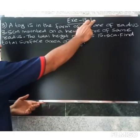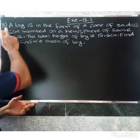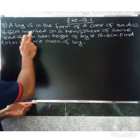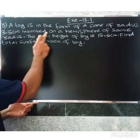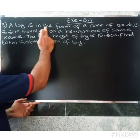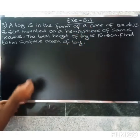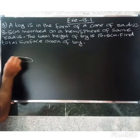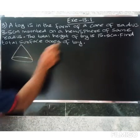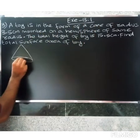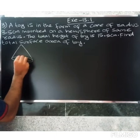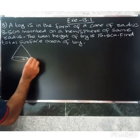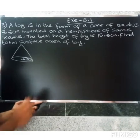Welcome friends. This is Exercise 13.1, Question 3. The toy is in the form of a cone of radius 3.5 centimeters mounted on a hemisphere of the same radius.